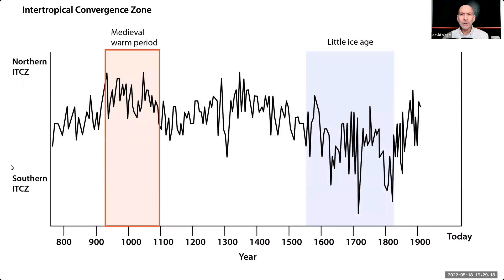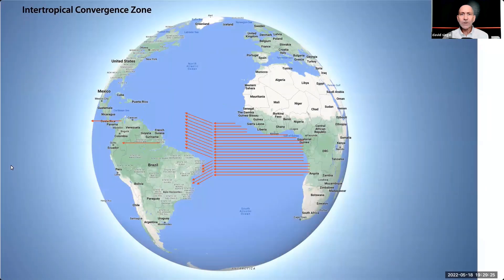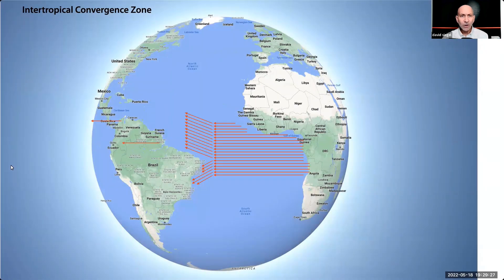Look at the medieval warm period. See how the ITCZ is high during this time? Jim Steele shows that when the ITCZ is more north, as it was during the medieval warm period and is today, the eastern point of South America sends most of the incoming warm water northward to the North Atlantic. This is the period we're in now.